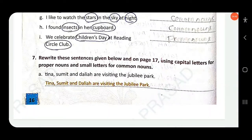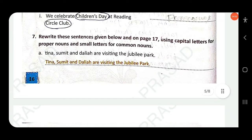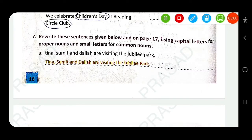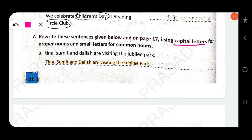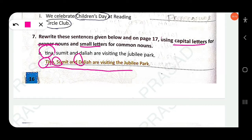Next exercise on page 17: rewrite these sentences using capital letters for proper nouns and small letters for common nouns. 'Tinna, Sumit, and Dalia are visiting the Jubilee Park.' The first one is already given — T, S, and D are capitalized, and Jubilee Park has J and P capitalized because it is the name of a particular park.